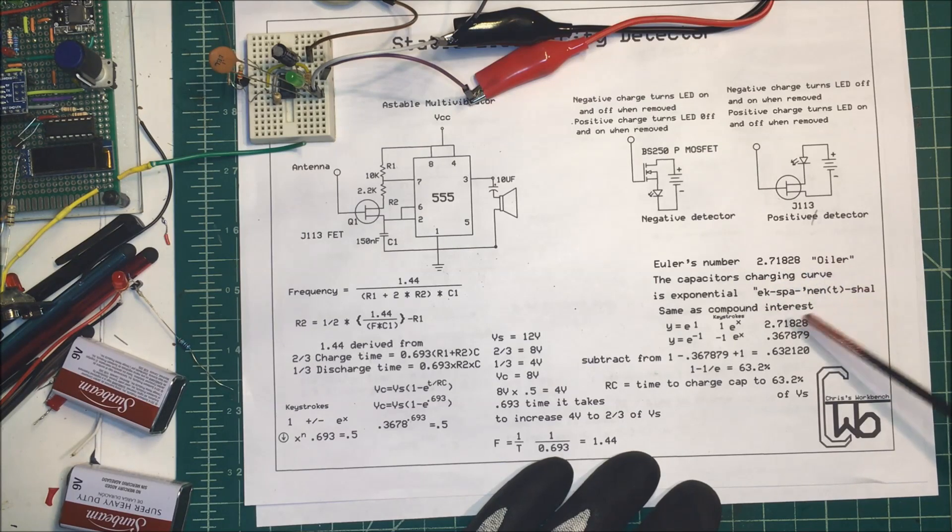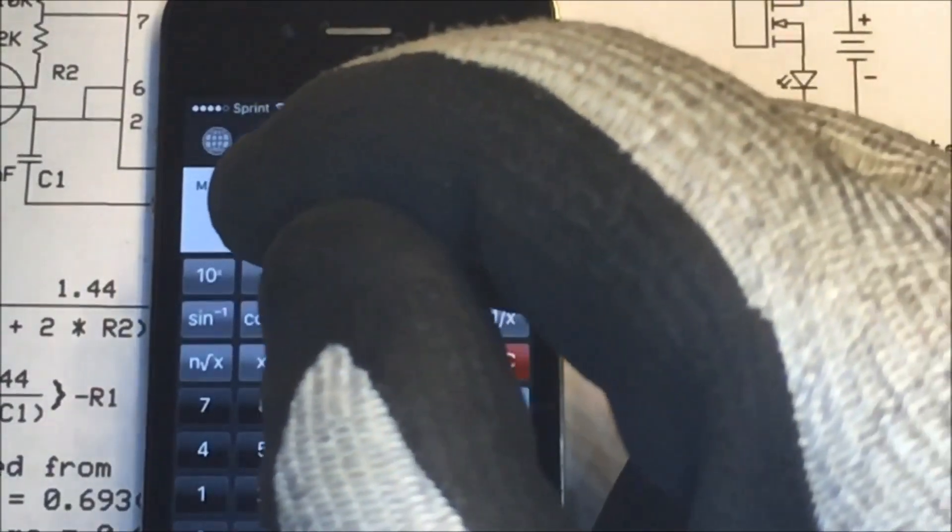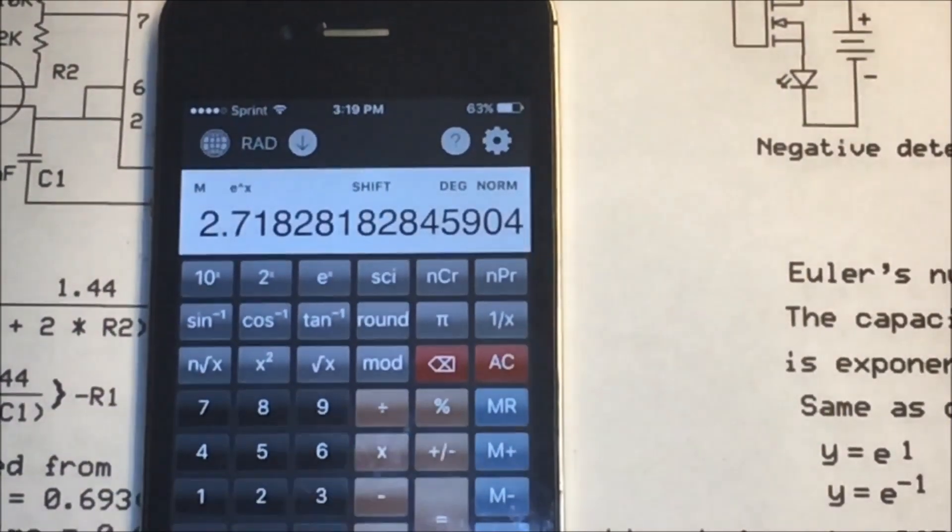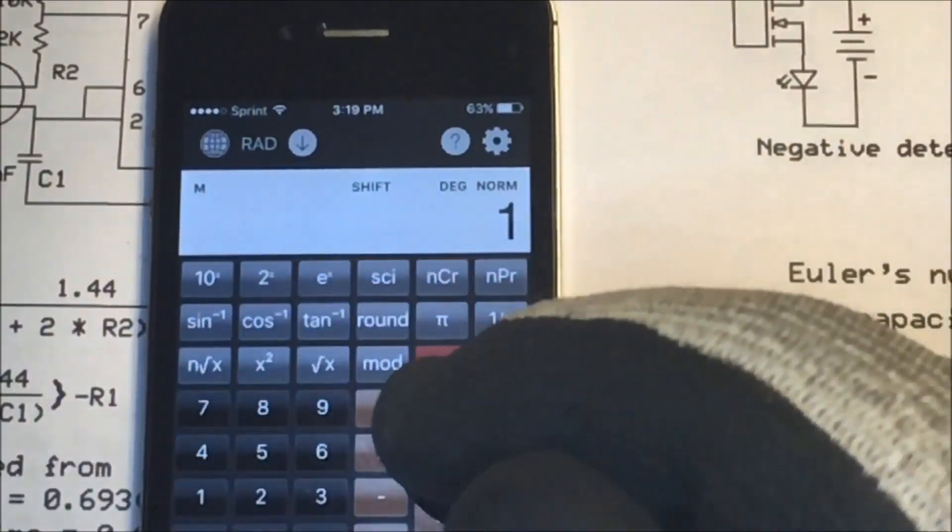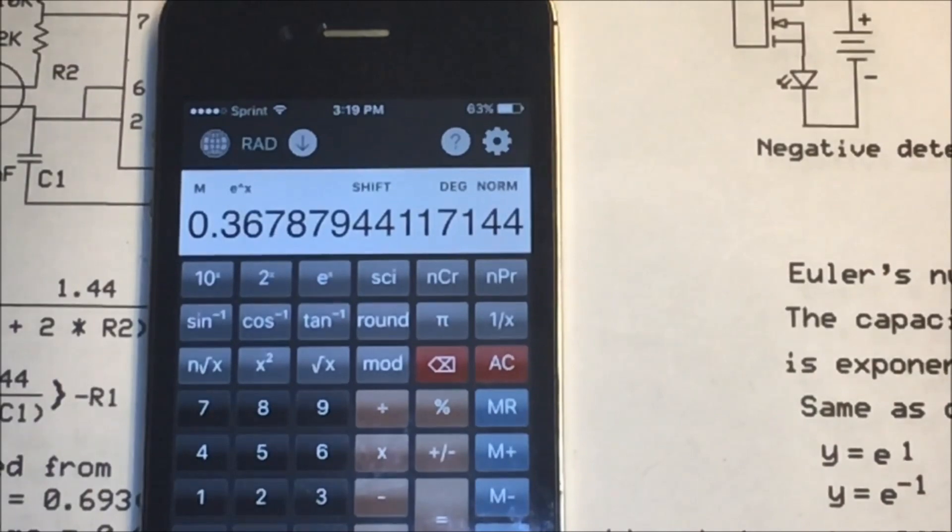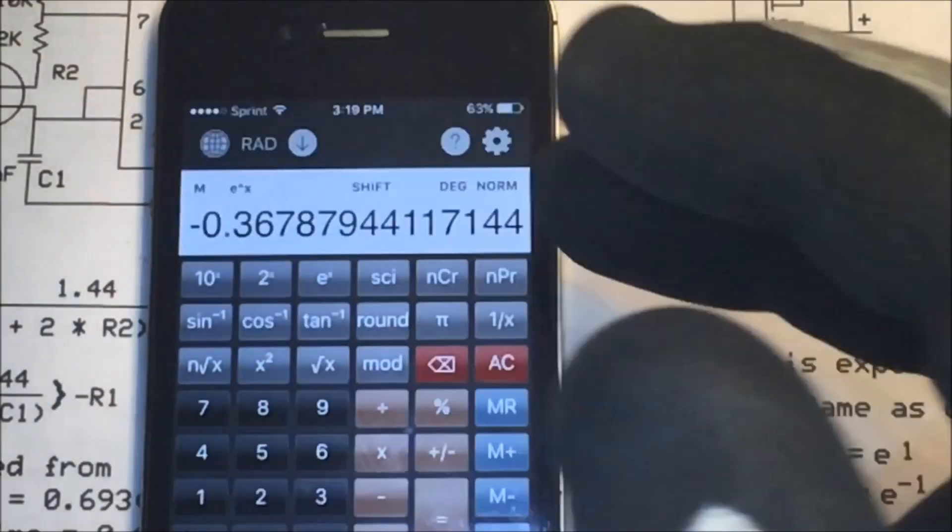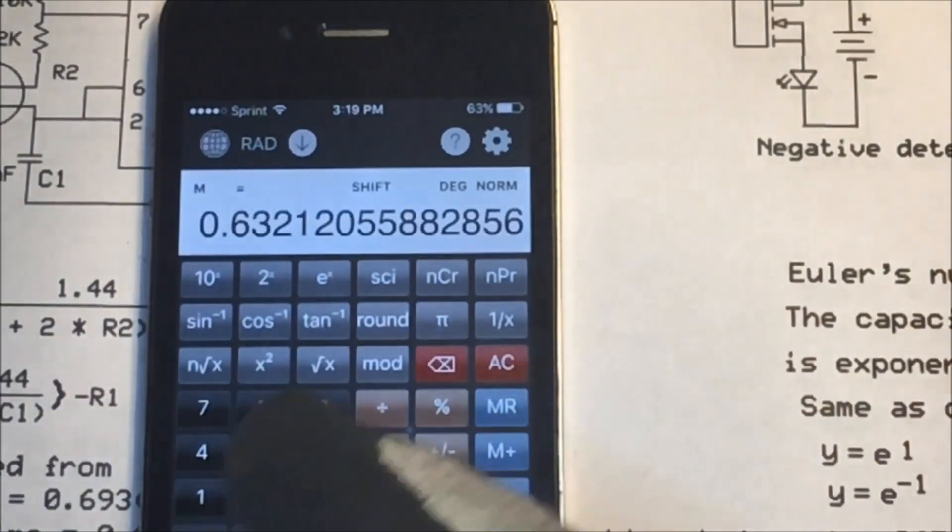And we'll do that on the calculator. To find Euler's number on the calculator just take 1 to the e^x up there—that's 2.71828. That's Euler's number. We want e to the minus 1, which is 0.367. Now we want to subtract 1 from that. In order to do that we can just take minus that...